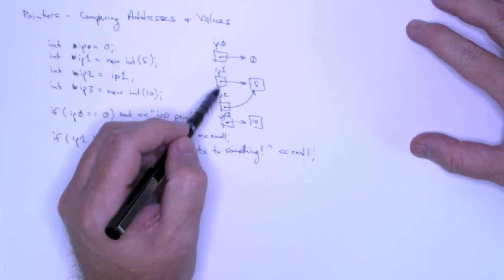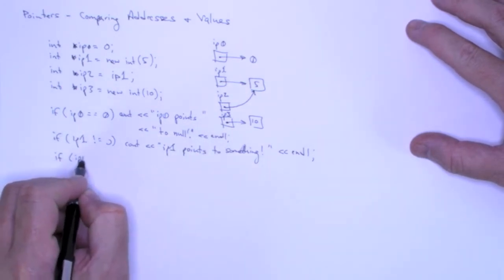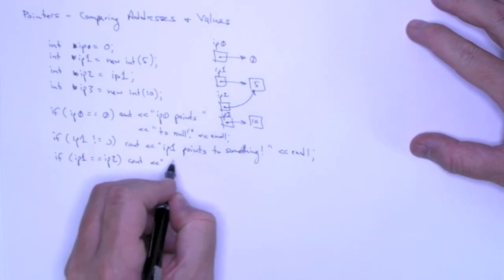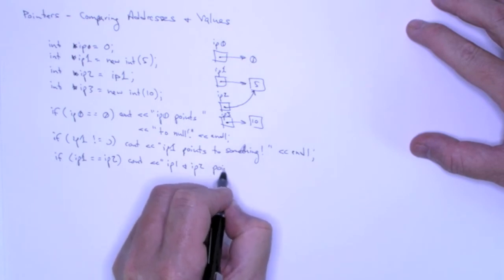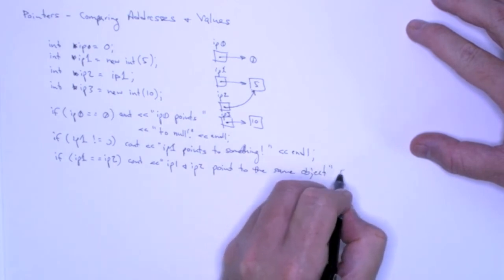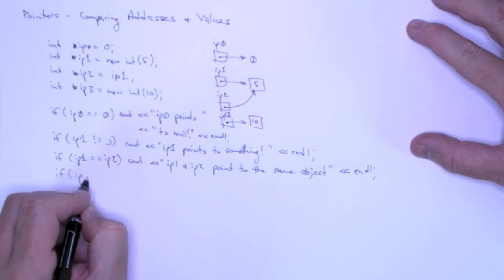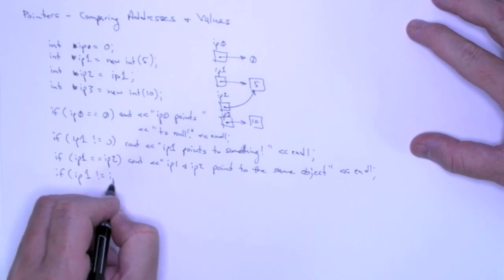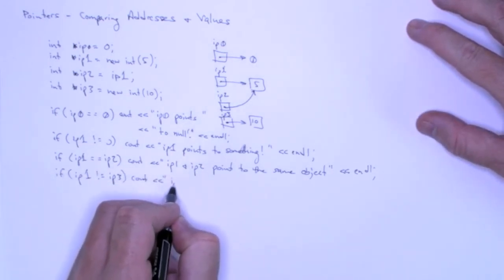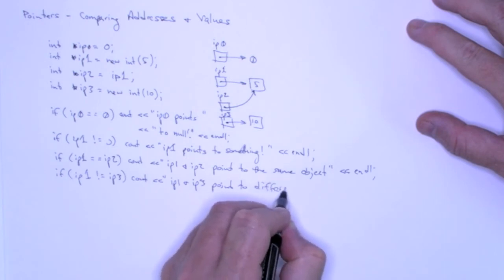We can also determine if two pointers point to the same object by comparing their values or comparing their addresses. So if IP1 is equal to IP2, that means that they hold the same address. So you can conclude that IP1 and IP2 point to the same thing. And we can also use the inequality operator to determine that IP1 and IP3 point to different objects. So these two addresses will be different.